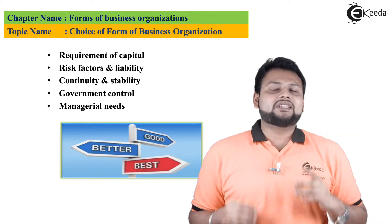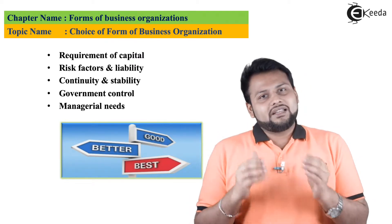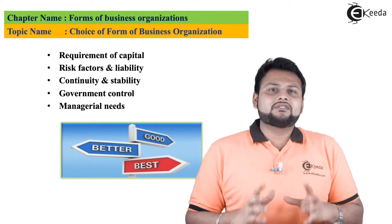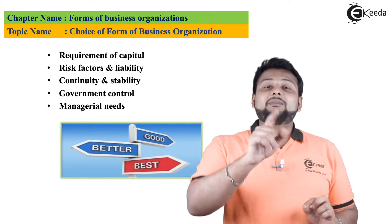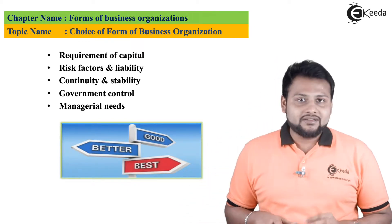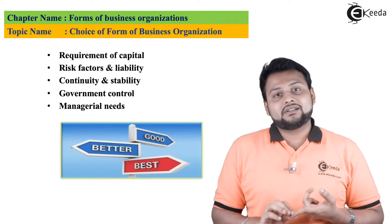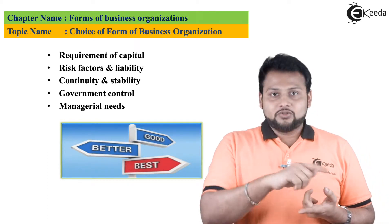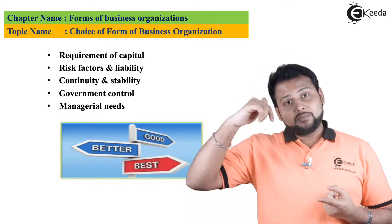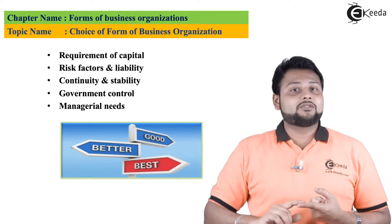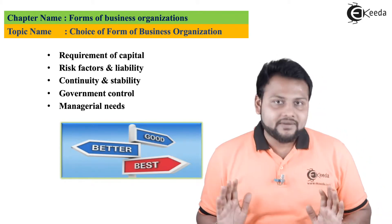There is an inverse relationship here: for sole proprietorship and partnership, the risk is relatively less but the liability is unlimited. For a company, the risk is very high — due to government regulations and market factors — but the liability is limited.